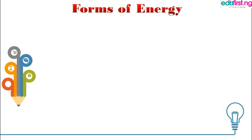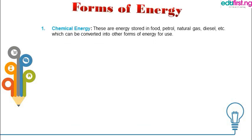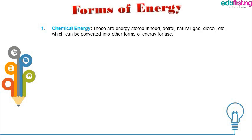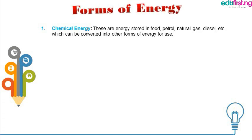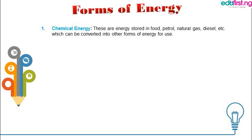Here are several forms of energy — the forms in which energy exists in nature. We have chemical energy. Chemical energy is stored in food, petrol, and natural gas, and can be converted from one form to another. The energy in food is the reason why when you eat, you receive strength and are re-energized to do work, because the chemicals in the food have been converted into another form of energy to help you do work.